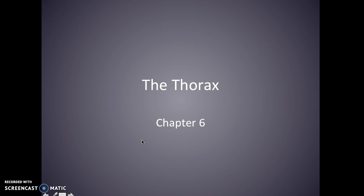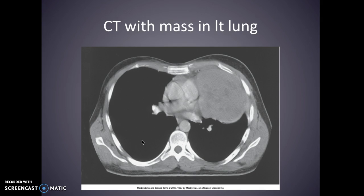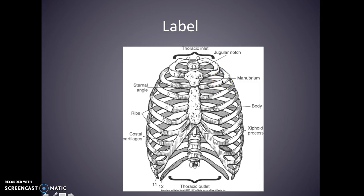We're going to talk about the thorax in the next chapter. This is a CT axial with a huge mass in the left lung — this patient is in a bad way.